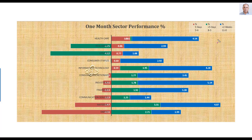The three best performing sectors this week are Healthcare, Real Estate, and Utilities — and the next one is Consumer Staples. All four of these best-performing sectors are in defensive areas.